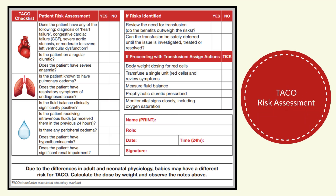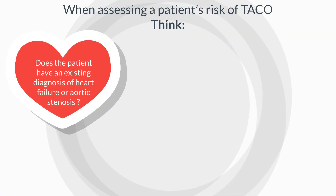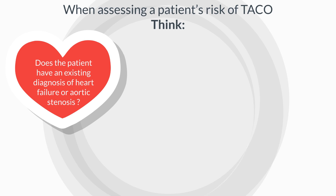This highlights the importance of the pre-transfusion TACO risk assessment, which is useful as a pre-transfusion checklist. It was developed through analysing data reported to SHOT, which identified common themes in patients who develop TACO. When assessing a patient's risk of TACO, think heart, lungs, fluid. Does the patient have an existing diagnosis of heart failure or aortic stenosis?